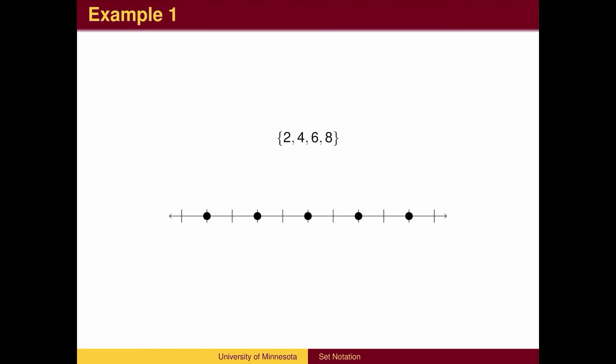The same set could be described in a different way, such as the distances between pairs of points in this diagram. Certain distances appear more than once, but we only list them once in the set.